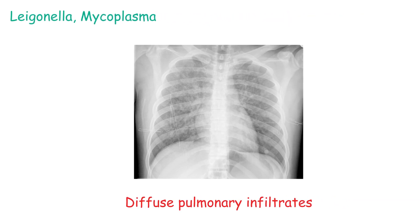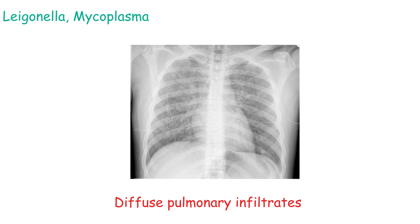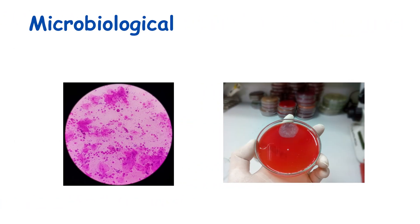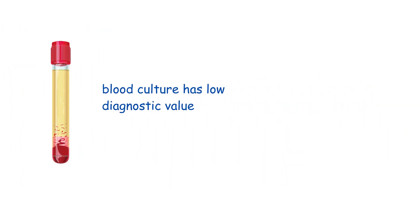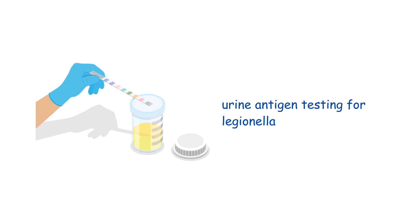Diffuse pulmonary infiltrations are seen in Legionella and Mycoplasma infections. Microbiological confirmation can be done using sputum Gram staining and culture. Pleural fluid aspiration and culture can be used in cases where there are pleural effusions. Blood culture can also be done, but it may have a very low diagnostic yield. Rarely, antigen testing in urine for Legionella is done, and viral antigen testing is also done very rarely.